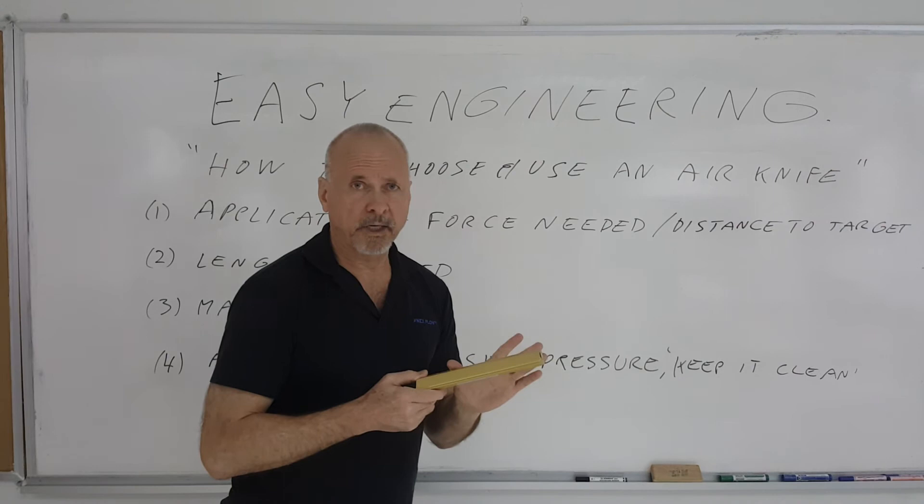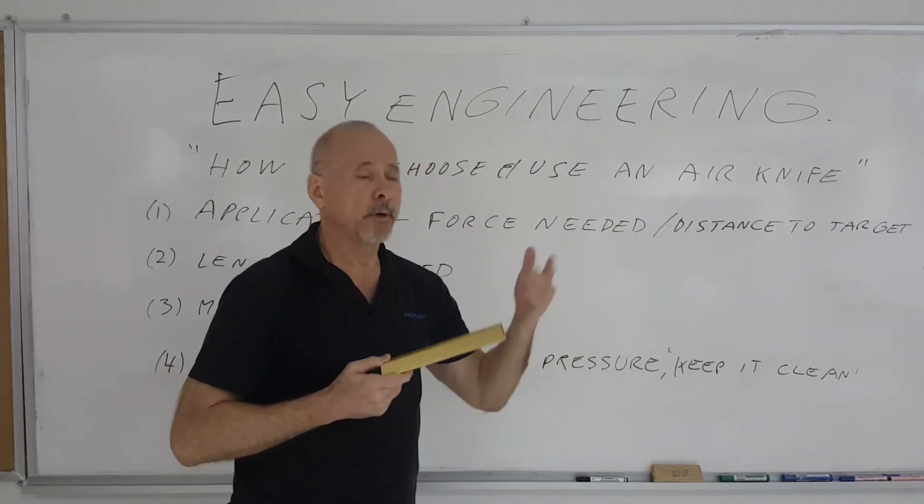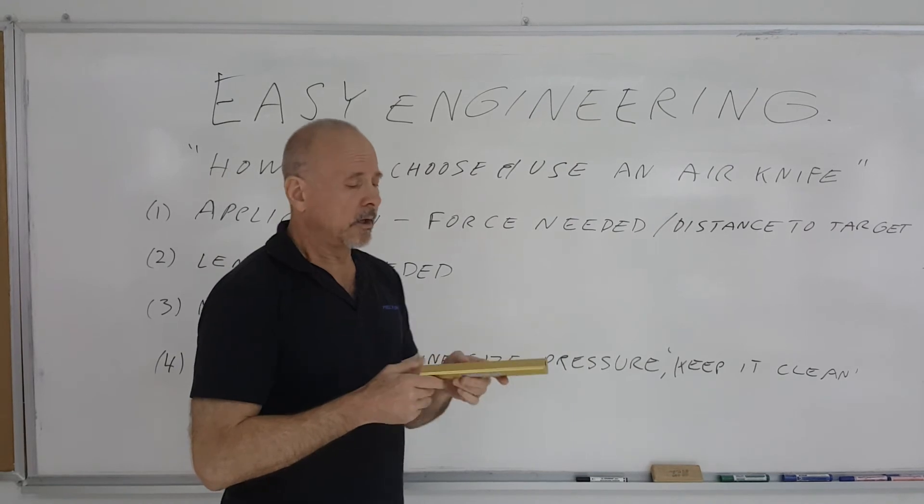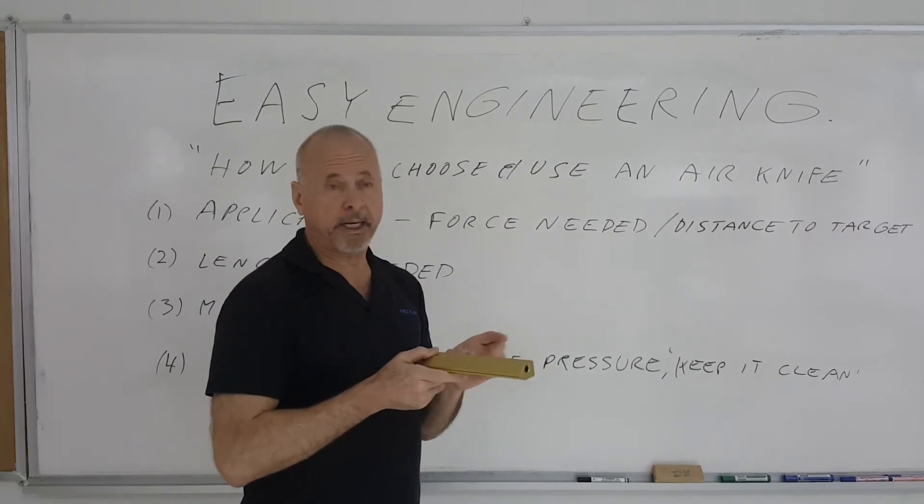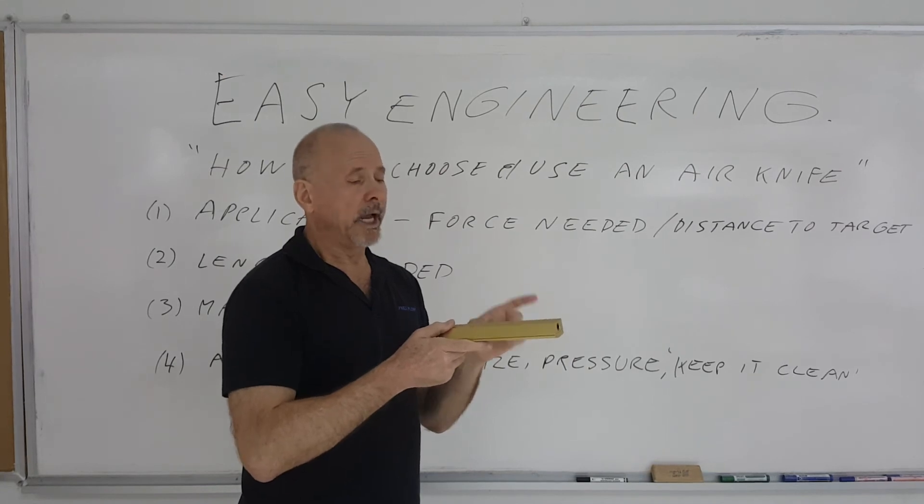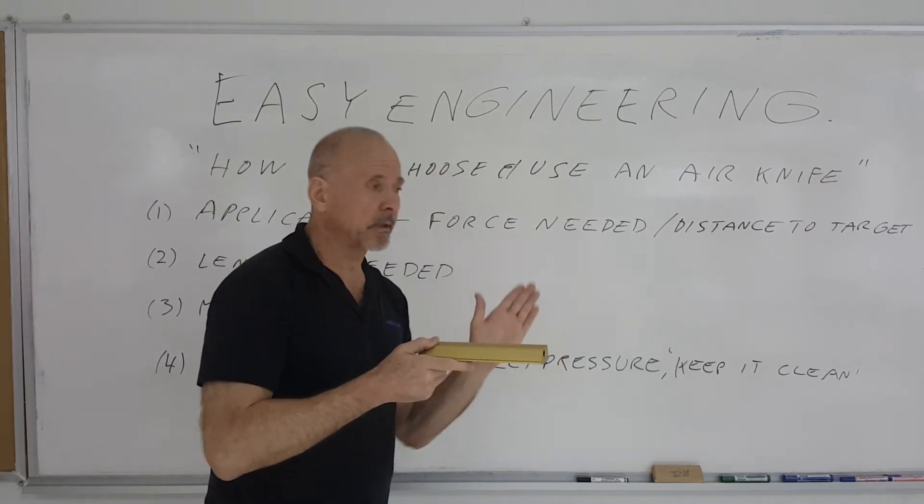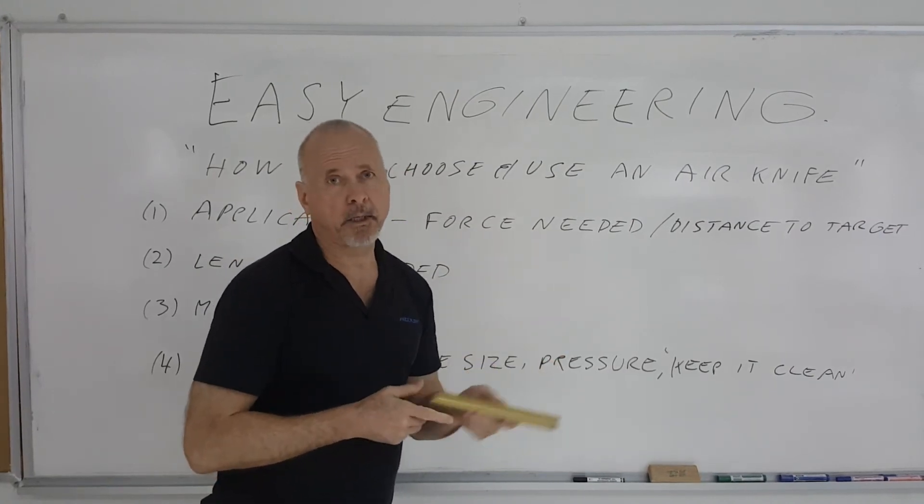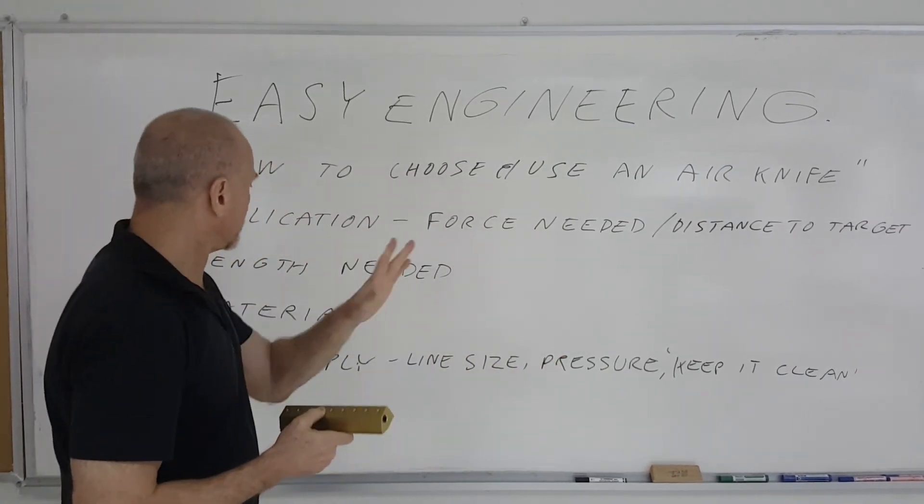Air knives do consume compressed air. The longer they are the more air they're going to consume. So you want to make sure that that line size is adequate. One way to be sure is to have a pressure gauge mounted a few inches upstream from the air knife connection and then while the air knife is running see what that pressure is. If it drops a lot then your line size is probably a lot too small. So you've got to check that air supply.